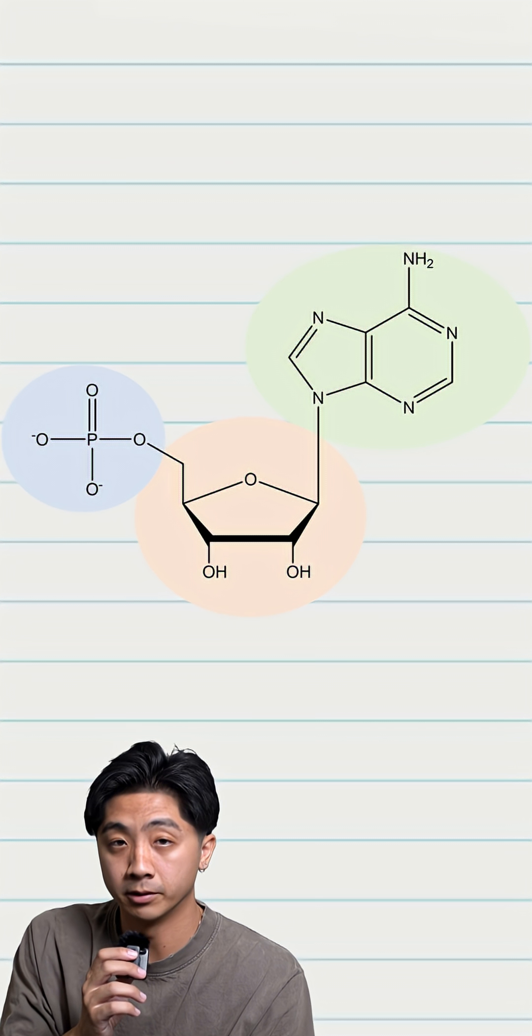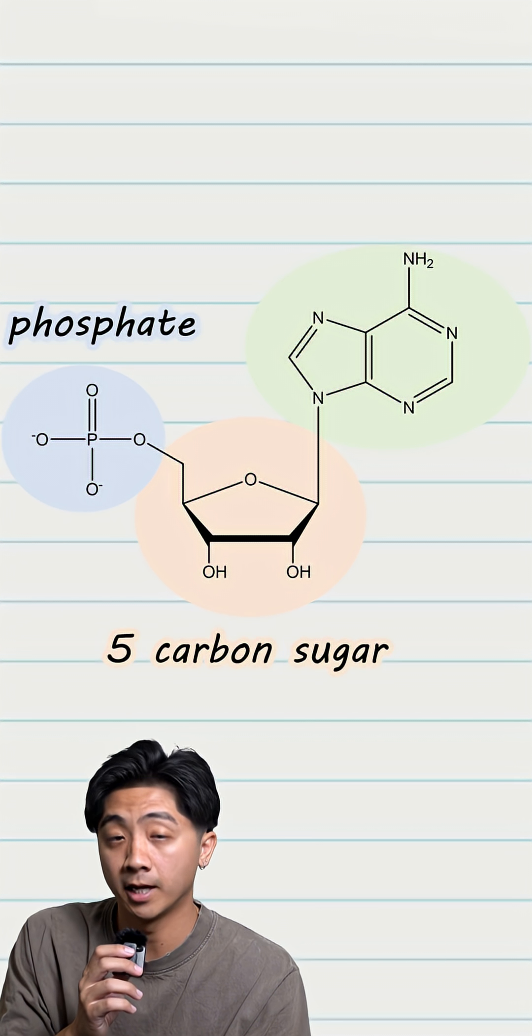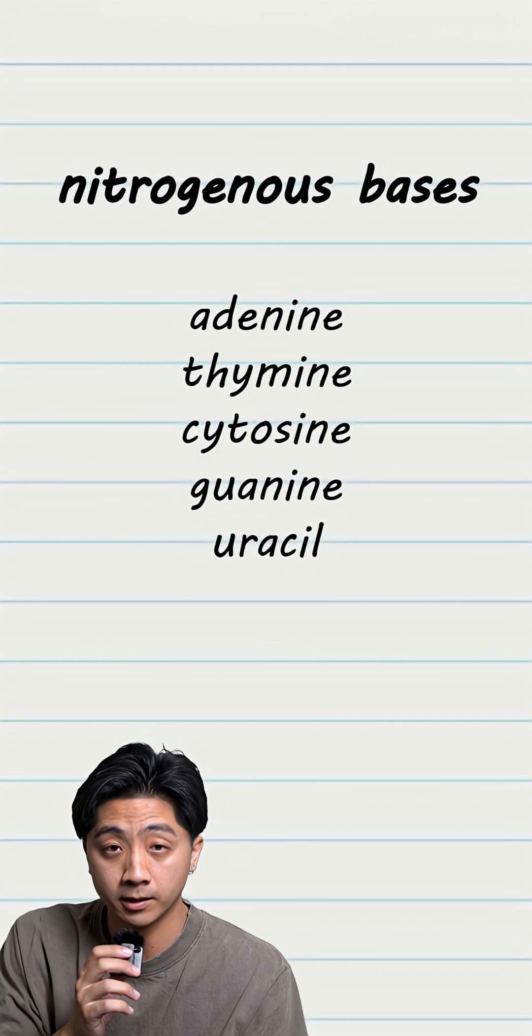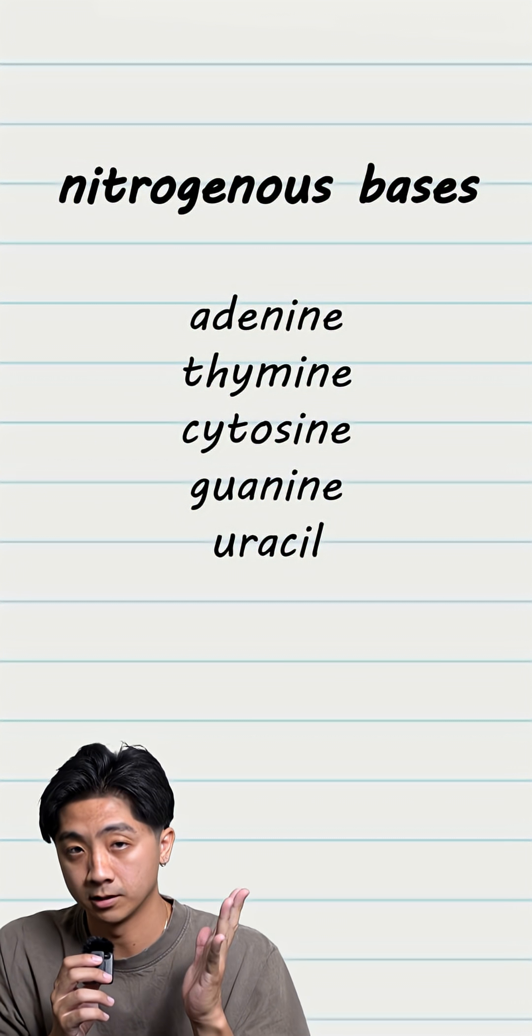A nucleotide is composed of a 5-carbon sugar, a phosphate, and a nitrogenous base. Specifically, adenine, thymine, cytosine, guanine, and uracil.